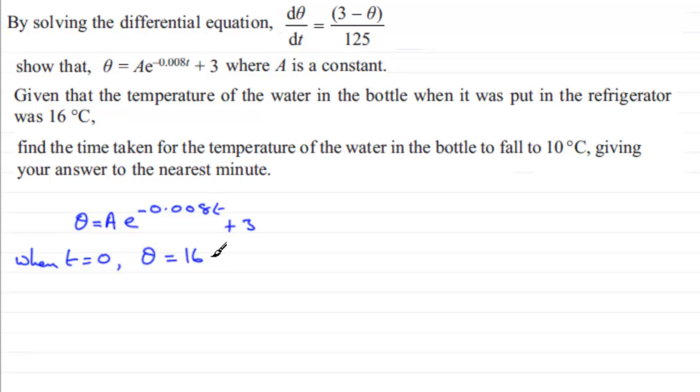And if we substitute this into our equation here, we've got 16 equals the constant A multiplied by e to the power 0. E to the power 0 is going to be 1, so we've just got A and then we've got plus 3. So clearly from this, if we take 3 from both sides, A is equal to 13. So what we've got then is therefore theta equals 13e to the power minus 0.008T and then plus 3.